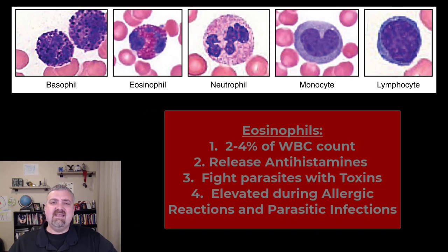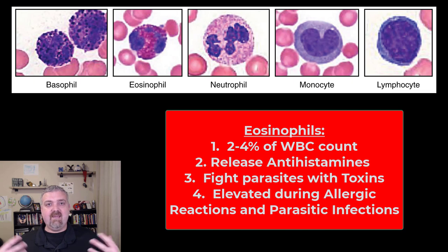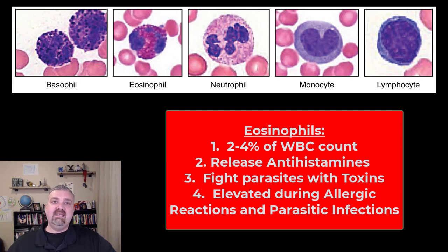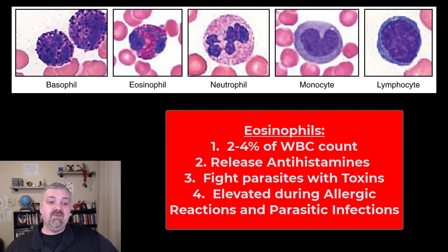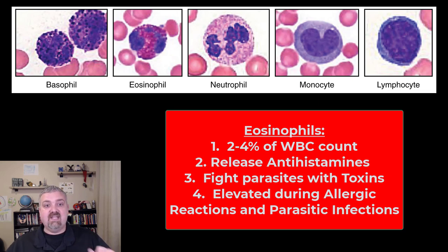Next we have the eosinophils. Neutrophils are called that because neutral stains stain them the best. Eosinophils are called this because an acidic stain known as eosin is what stains them the best. These are generally only two to four percent of your white blood cell population. The key with them is they release antihistamines — so whenever there's an inflammatory response, your basophils and mast cells are dumping histamine into the environment, and eosinophils release antihistamine molecules to keep that from getting out of control. They also produce chemicals toxic to parasites. They are phagocytes — they can engulf some things, but if something is too large to engulf like a parasitic worm, they dump chemicals that are toxic to that parasite. Think: around during allergic reactions and parasitic infections.